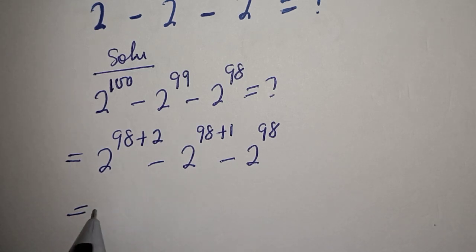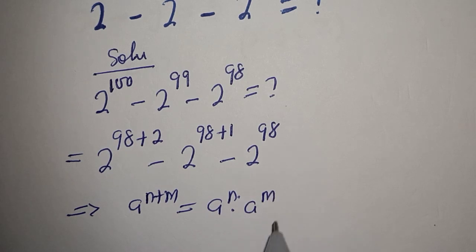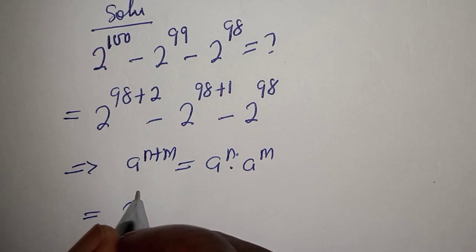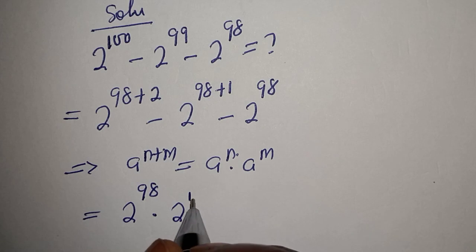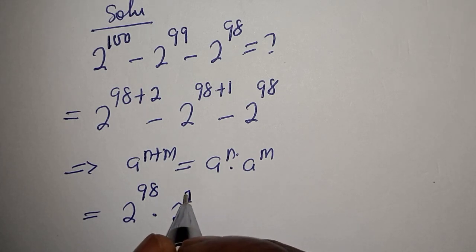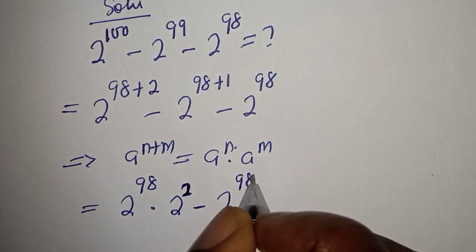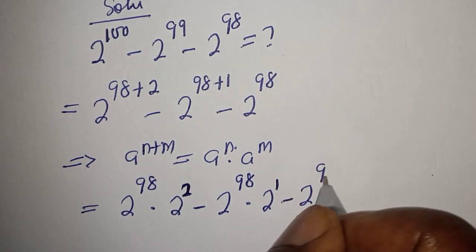This is equal to — if you have a raised to power n plus m, this is equal to a raised to power n multiplied by a raised to power m. So this can be written as 2 raised to power 98 multiplied by 2 raised to power 2, minus 2 raised to power 98 multiplied by 2 raised to power 1, minus 2 raised to power 98.